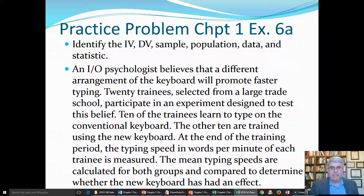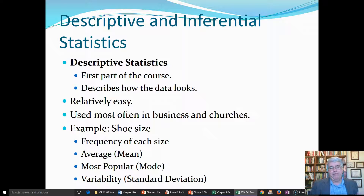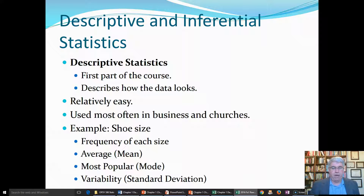That's how we apply these definitions to an example. Now let's talk about the difference between descriptive and inferential statistics. Descriptive statistics are the first part of the course — they describe how the data looks. It's relatively easy and people understand it intuitively. It's often what's used in businesses, churches, and non-profits because it doesn't take very sophisticated math. For example, studying shoe size with a sample of 100 people: we could get the frequency of each shoe size, the average shoe size, the modal shoe size, and the standard deviation.